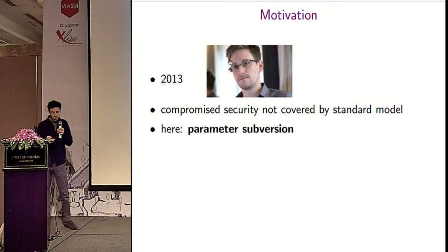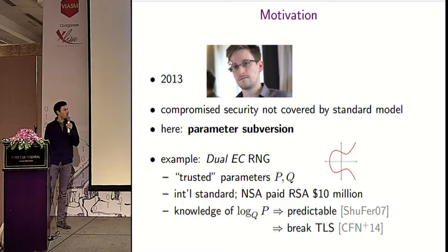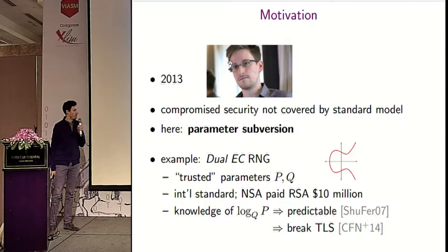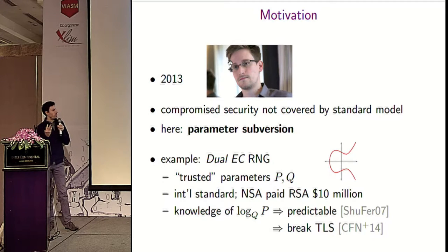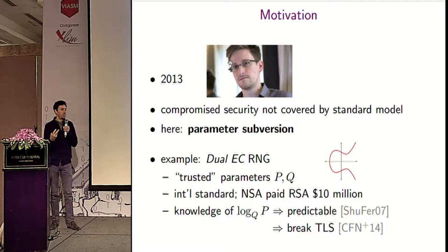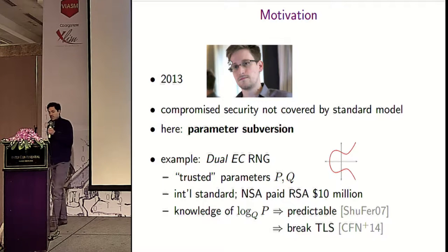The example already mentioned this morning is the dual EC random number generator designed by the NSA, where there are parameters — two elliptic curve points P and Q — which are supposed to be trusted. However, it has been shown that if someone knows the discrete logarithm of one point with respect to the other, he can predict the output of the RNG, and later Chekhov showed this can be used to break TLS.